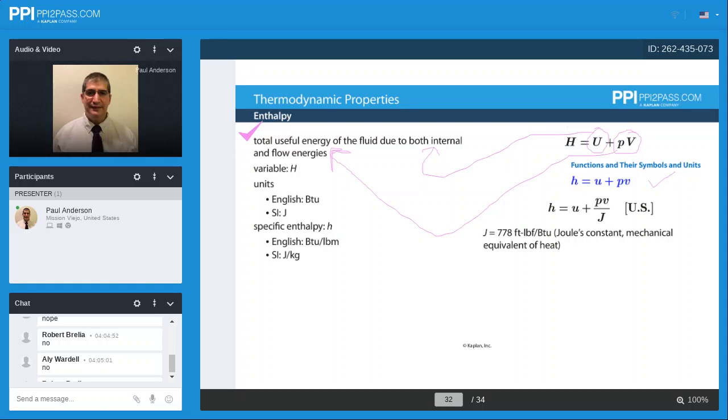So H equals enthalpy. Total energy of a flowing stream. So that's how much energy a stream carries into or out of a control volume.